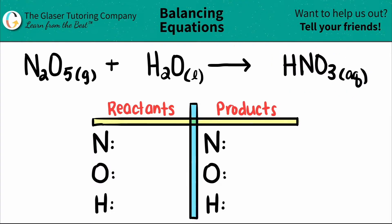I already wrote down a chart for us with the elements that we see on both sides of the equation. All we have to do is write down how many we have. I see that I have a 2 for the nitrogen, so I have 2 nitrogen.